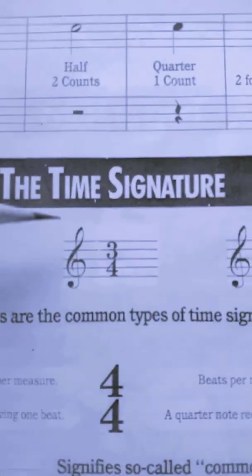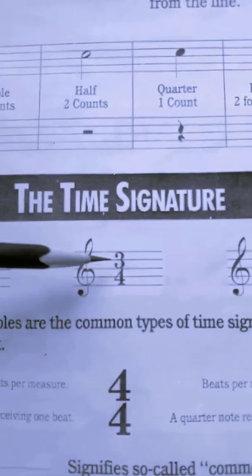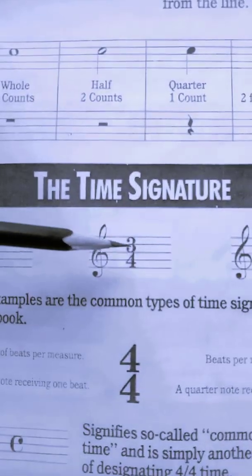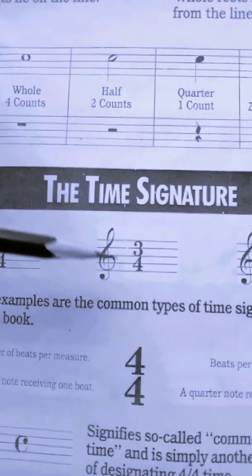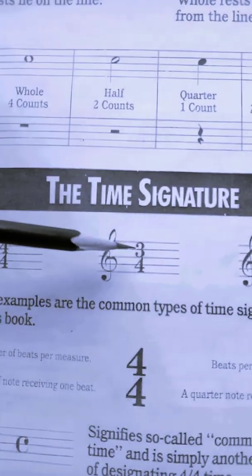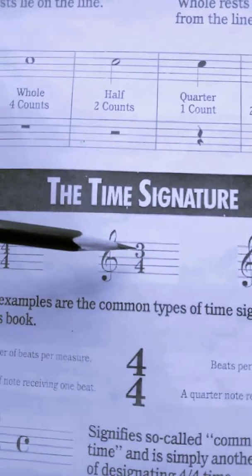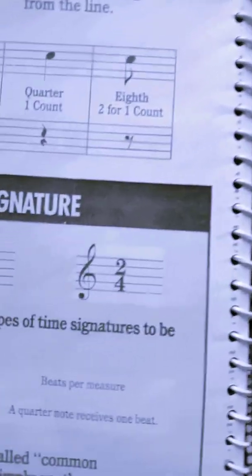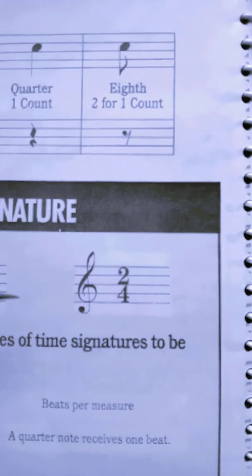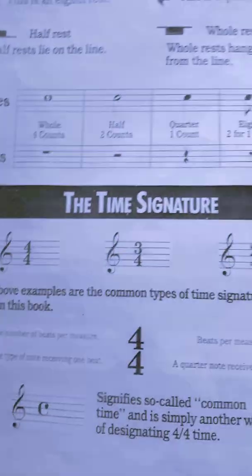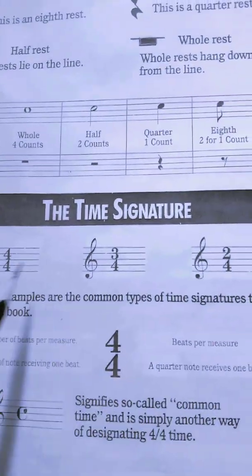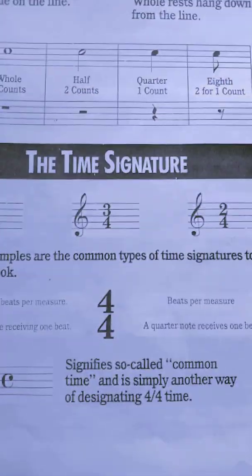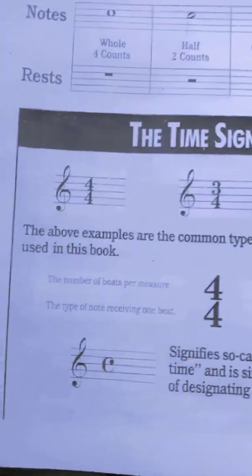The next time signature we will learn is three four, and after that two four. These are the most commonly used time signatures in music and are the common types of time signatures used in this book.